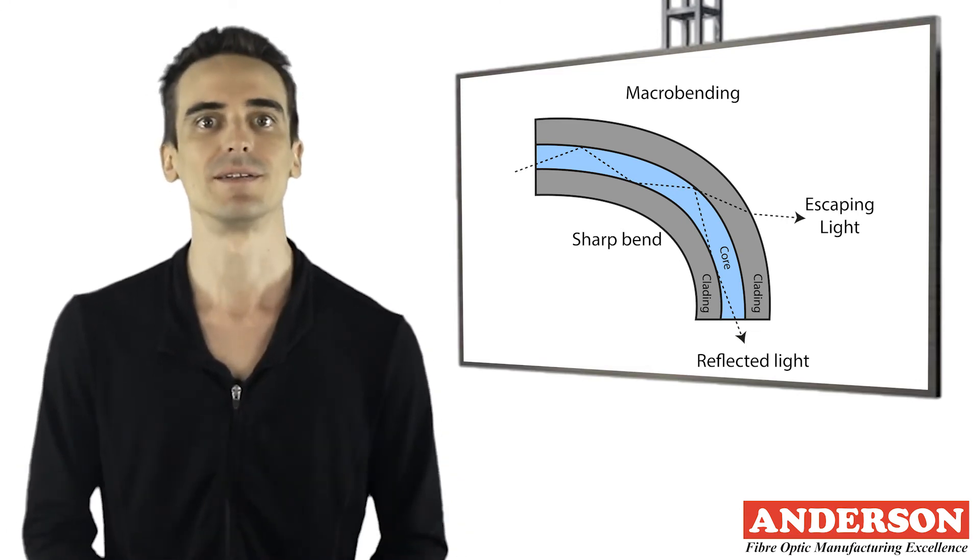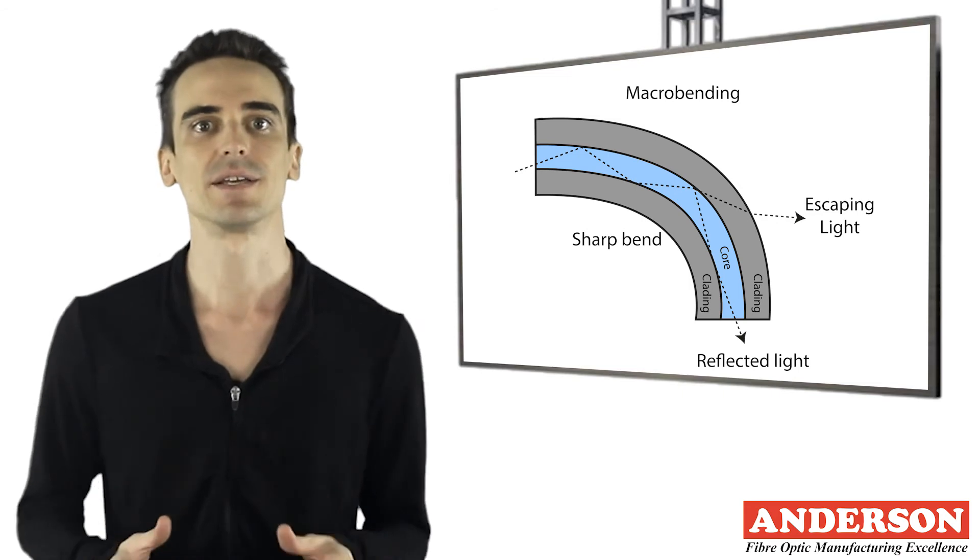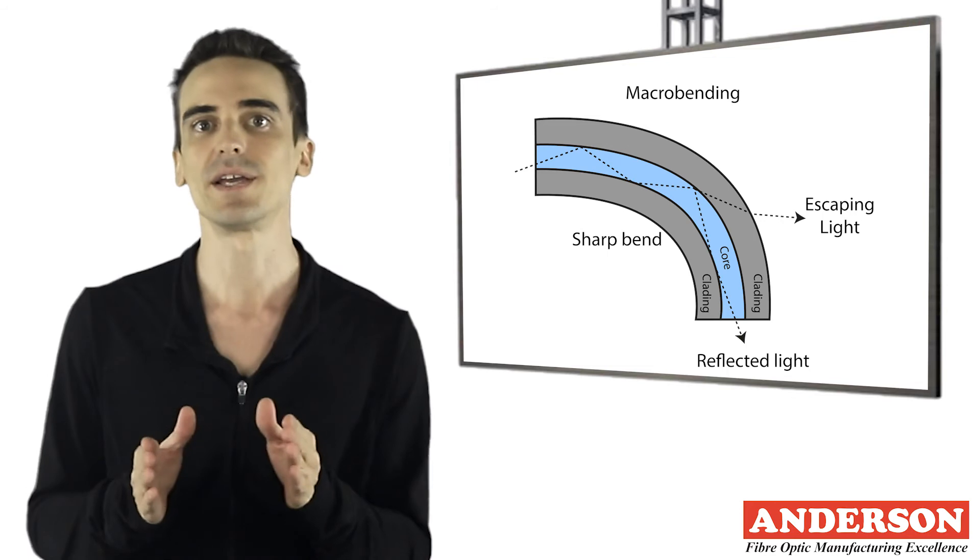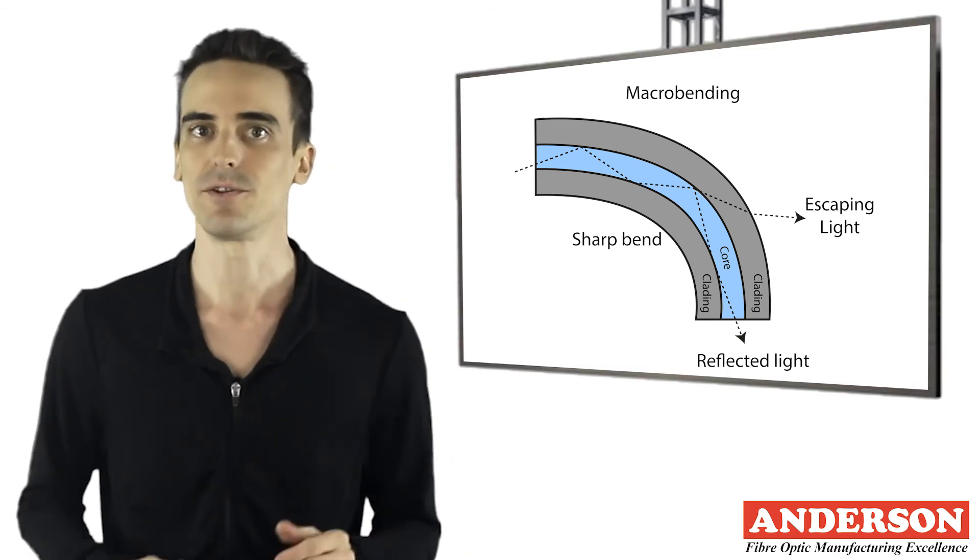The bending strain will affect the refractive index and the critical angle of the light ray in that specific area. As a result, the light traveling in the core can refract out and loss occurs.